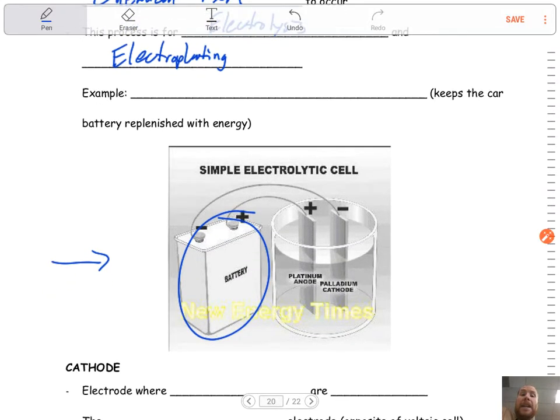But again, it's not a spontaneous reaction because if you look at table J, things like silver and gold and copper, they're at the very bottom of that list. They're not very active, so they need some other type of boost to get them going.